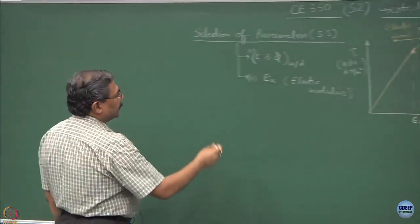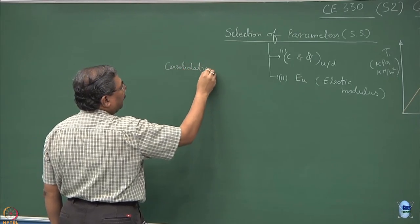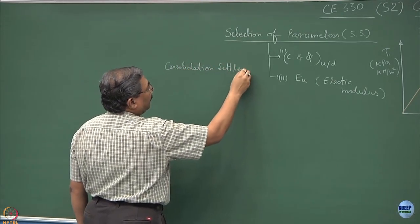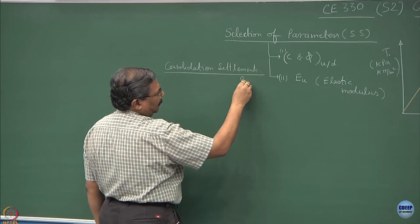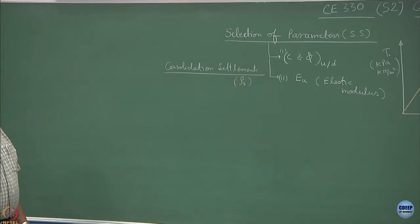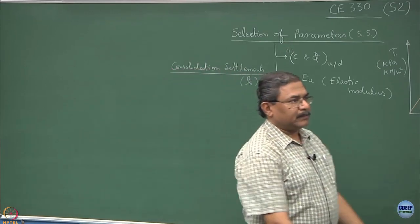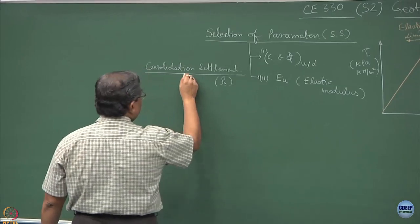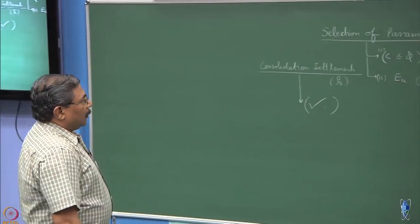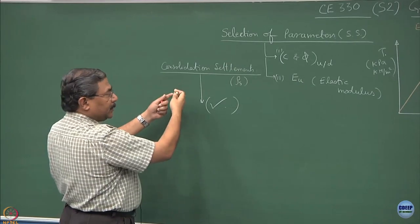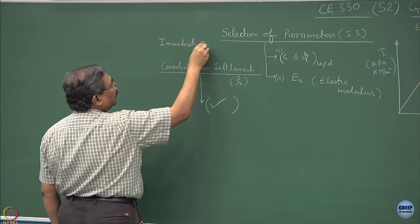If you remember, when we were discussing consolidation settlement, we defined consolidation settlements as rho_s or whatever. Before the consolidation occurs, there is a state where immediate settlements are going to take place. This theory we have already discussed in CE 323.